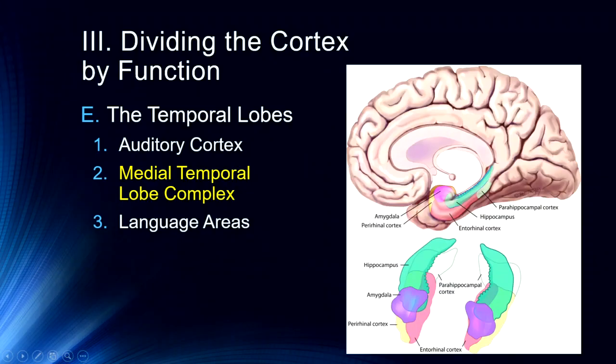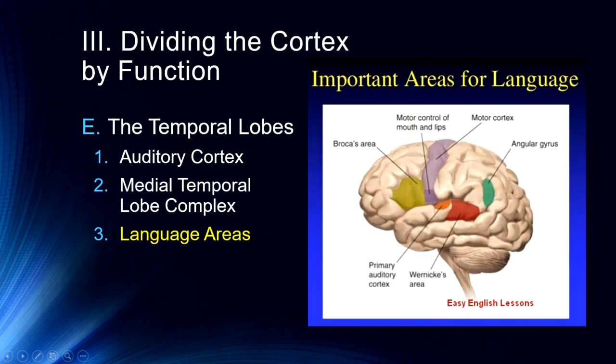Finally, we have some language areas in the temporal lobe. We will talk about Wernicke's area, which is where we process auditory information that gets transferred to Broca's area, which is where we start forming spoken language. We process spoken language in Wernicke's area, and then we begin to process our own spoken language in Broca's area, which is a supplementary motor area.